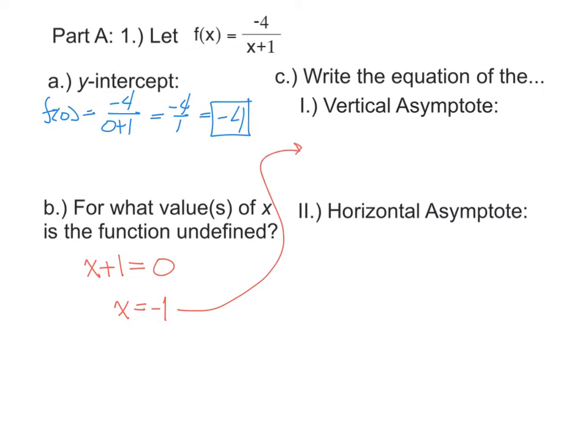This is going to lead right to our next problem. In part C, I ask you to write the equation of the vertical asymptote. The vertical asymptote is the vertical line where our function is undefined. In part B you found where the function is undefined when x equals -1. The vertical asymptote is the line x = -1. When you get to part C, just take your answer from part B and put it there.